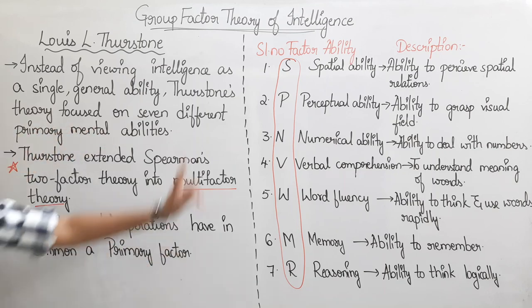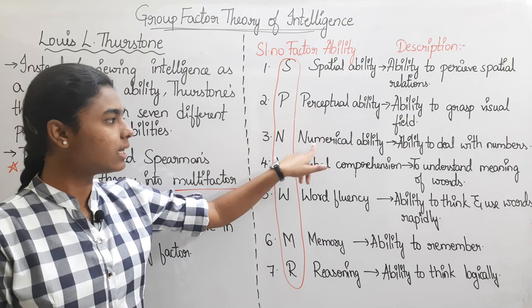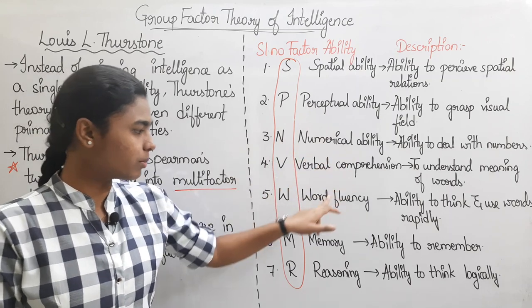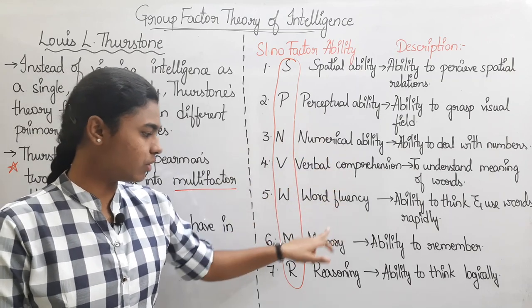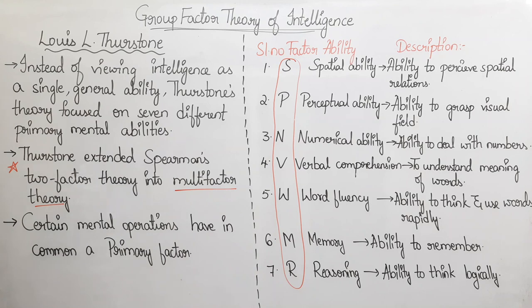To summarize, in the Group Factor Theory of Intelligence there are seven different primary mental abilities: Spatial ability, Perceptual ability, Numerical ability, Verbal Comprehension, Word Fluency, Memory, and Reasoning.